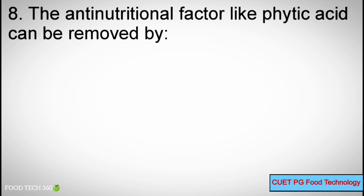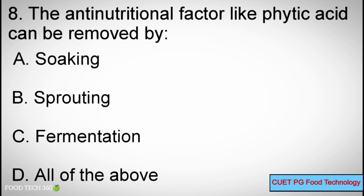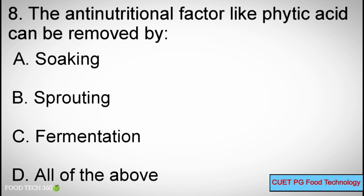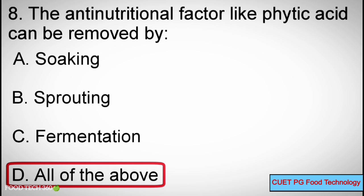Question Number 8: The anti-nutrition factor like phytic acid can be removed by — Options A: Soaking, B: Sprouting, C: Fermentation, D: All of the above. Correct answer: D, All of the above.